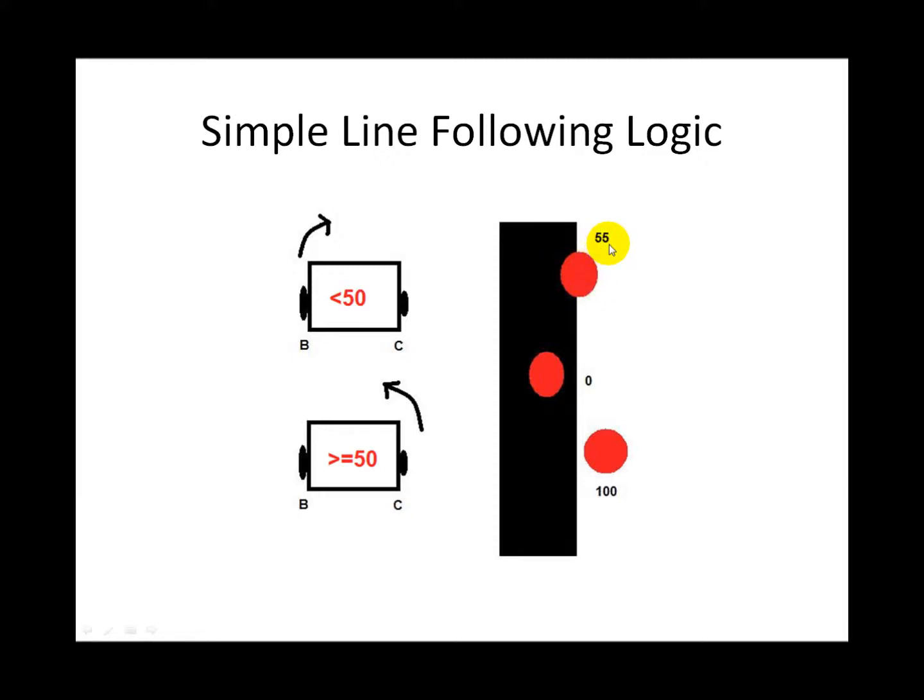Since this one's a little bit more over the white, it's reading 55. This here represents our robot where motor B is operating this wheel and motor C is operating this wheel.